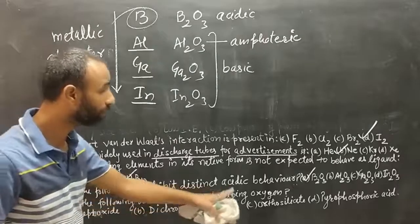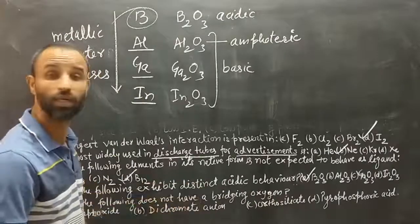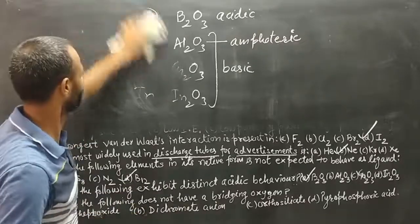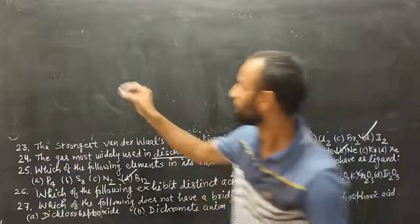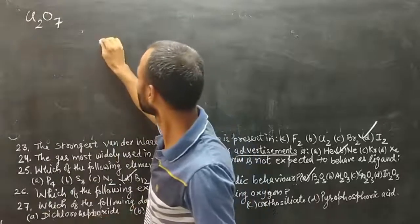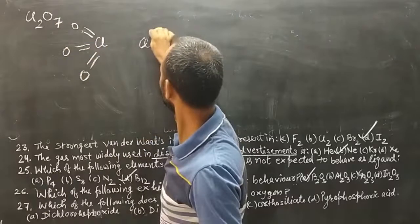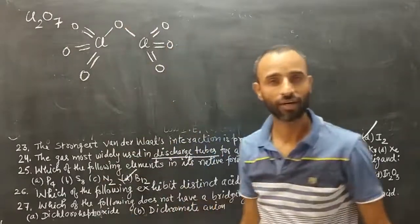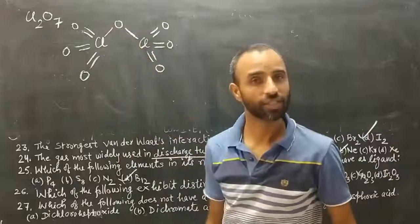Question 27: which of the following does not have a bridging oxygen? To answer this, we need to know the structure of each compound. First, Cl2O7 (dichlorine heptoxide): two ClO3 units are attached to each other by a common oxygen. So that bridging oxygen exists in Cl2O7.